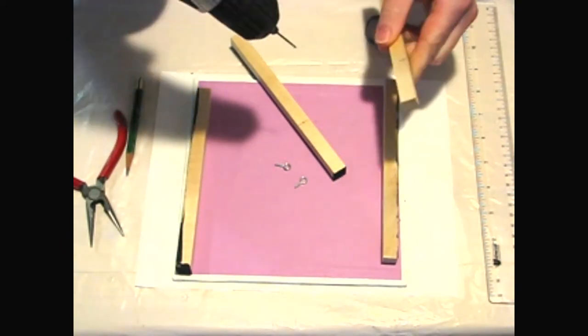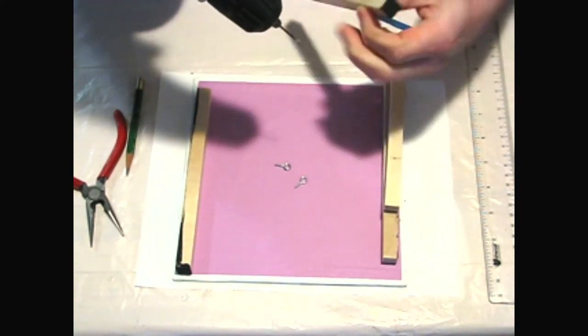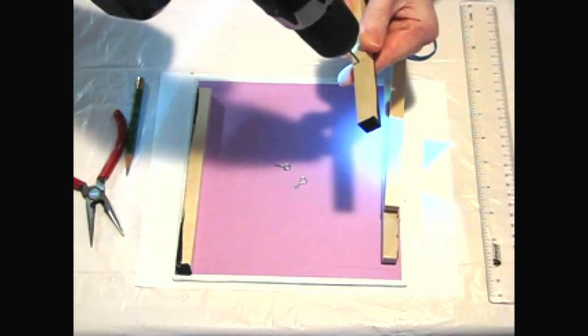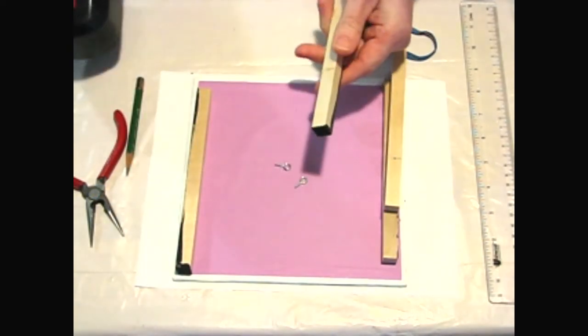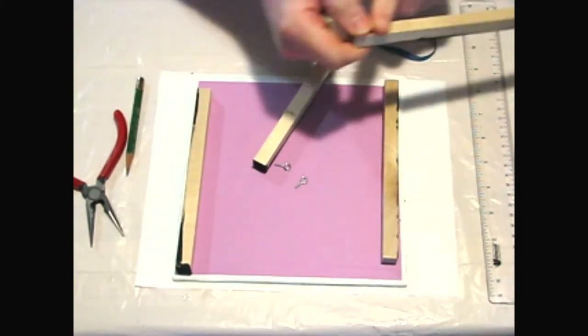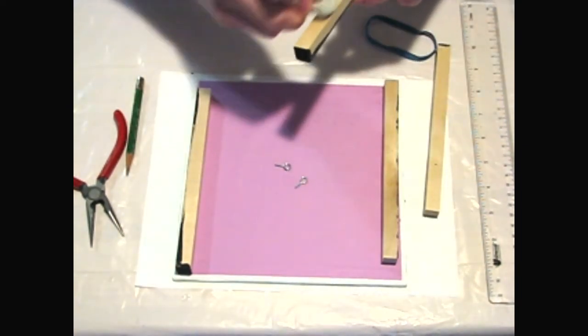So I use a drill with a bit that's slightly smaller than the screw diameter and only drill in a small amount. After drilling the pilot hole, I erase my pencil marks and put the screws in.